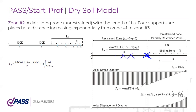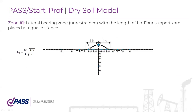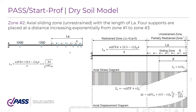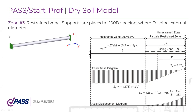You don't have to calculate the virtual anchor length because StartProf calculates it automatically and places the springs automatically. The main idea is that springs are condensed near the lateral bearing zone, less condensed in the sliding zone, and in the restraint zone the distance between springs is 100 diameters — a very long span. This is how the restrained zone works: the pipe is restrained between two anchors.